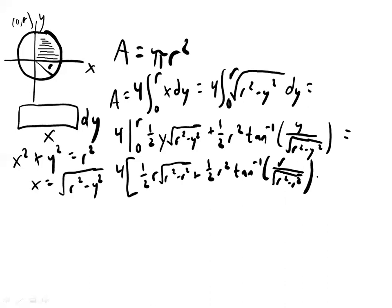And then minus the same expression with 0 plugged in. So it's going to be a 0 here, r squared minus 0 squared plus 1 half r squared tan inverse. Now a 0 in the denominator for y and r squared minus 0 squared.